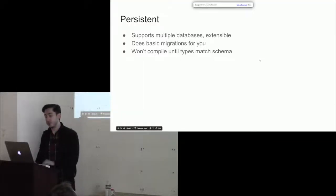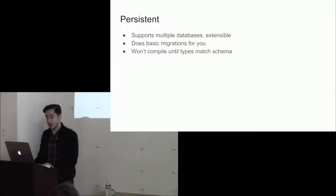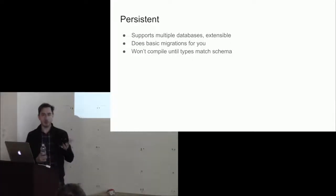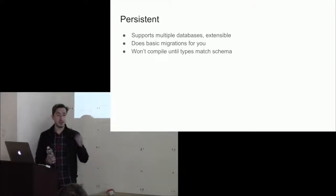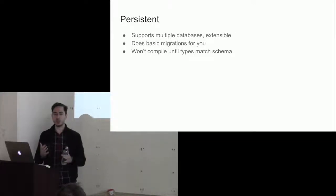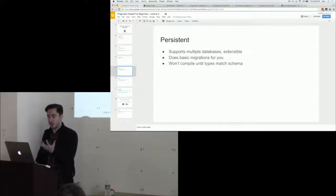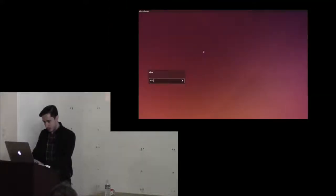Persistent also does migrations for you. It's not super sophisticated for advanced migrations, so I wouldn't use it in a long-lived production project, but if you're just starting out it's quite nice. The major advantage is that we're using Haskell to catch things at compile time — we don't want to write unit tests for everything just to verify our code makes sense against the schema, and when we change things we want the compiler to tell us right away.